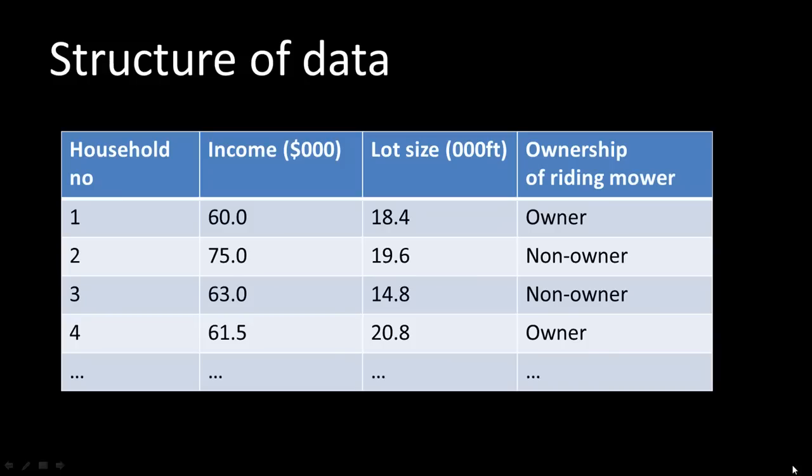Let's understand the structure of the data files we'll be using for analysis. A data file looks something like this: you've got a bunch of columns and a bunch of rows. In this case, you've got household number, income in thousands of dollars for that household, the lot size of the lot on which that house exists, and whether or not the owner of the house also owns a riding mower. I've taken this example from the book by Shmueli and Patel. This is the typical example of the kind of data file that we'll be using.